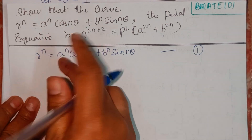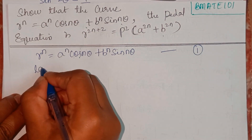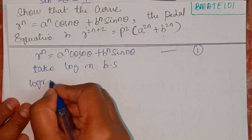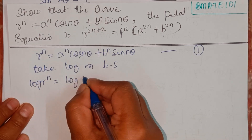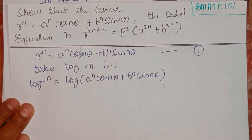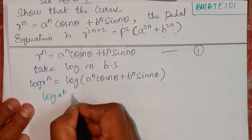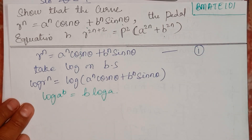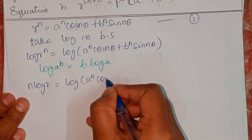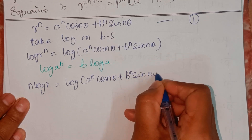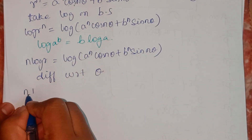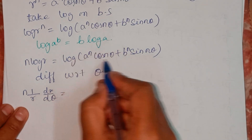The very first step — take log on both sides. It will become log(r^n) = log(a^n·cos(nθ) + b^n·sin(nθ)). Expanding using the log power rule, it becomes n·log(r) = log(a^n·cos(nθ) + b^n·sin(nθ)). Now we differentiate with respect to θ. It will become n · (1/r) · dr/dθ equals the differentiation of the right side.